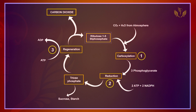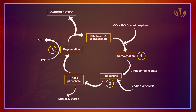During Regeneration, carbon dioxide is released and 1 ATP is used. Let's repeat the cycle once more: Ribulose-1,5-biphosphate undergoes Carboxylation with CO2 from the atmosphere to form 3-phosphoglycerate. Reduction uses 2 ATP and 2 NADPH to form Triose-phosphate, which can become sucrose and starch. Regeneration reforms Ribulose-1,5-biphosphate using 1 ATP from ADP. This completes the C3 Calvin cycle.